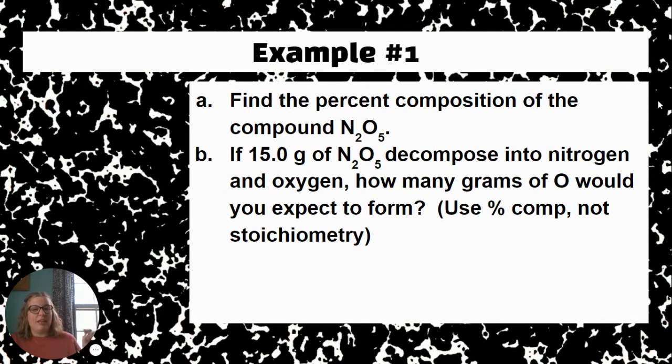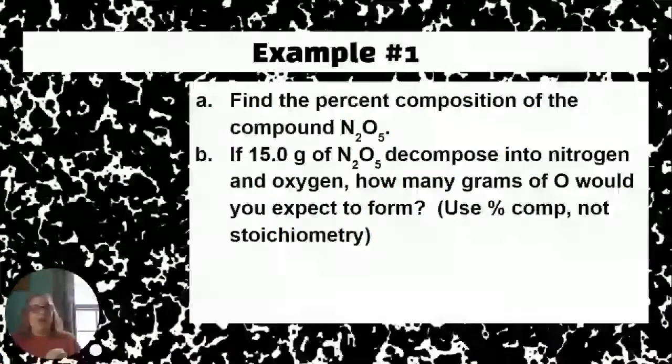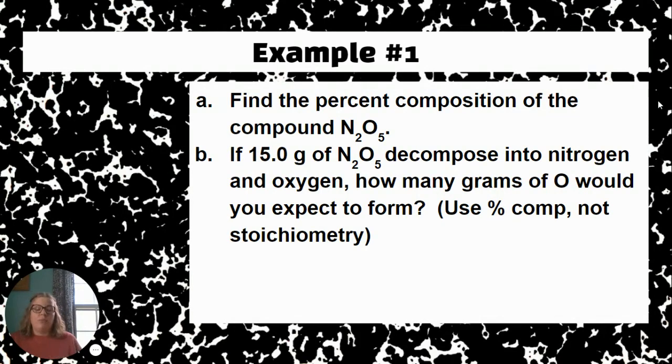The second part then is going to take that percent and apply it to a lab situation. So for B, it says if 15 grams of N2O5 decompose into nitrogen and oxygen, how many grams of O would you expect to form? Now this in theory could be solved via stoichiometry, but with this circumstance, I just want you to use the percent composition calculation. So you're going to have to apply your percent from A to answer B, okay? So that's the first example.